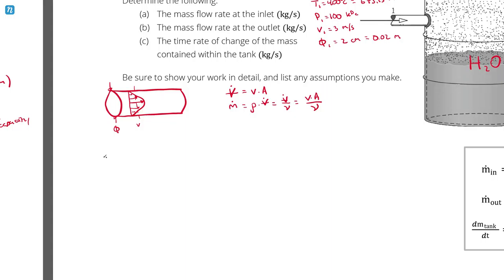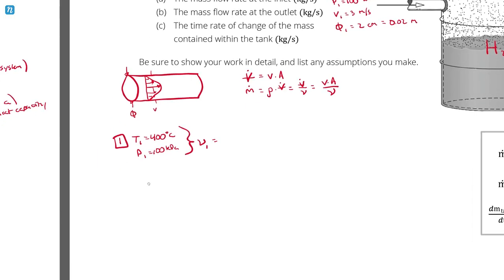At state 1, T1 is 400 degrees Celsius and P1 is 100 kilopascals. I'll use those to determine the specific volume V1, then use that to determine the mass flow rate. At state 2, T2 is 200 degrees Celsius and P2 is 2500 kilopascals. That'll give me V2, which will allow me to calculate mass flow rate 2.